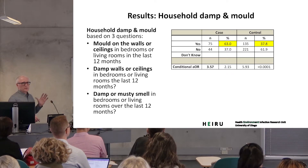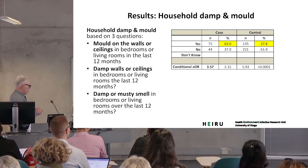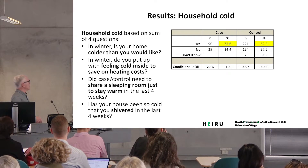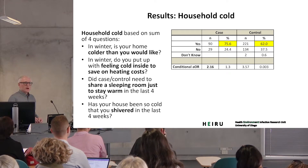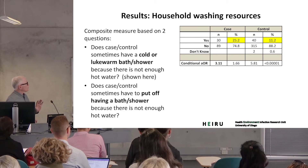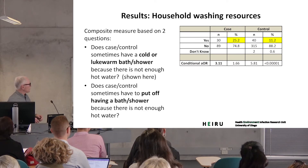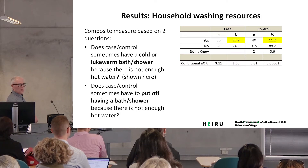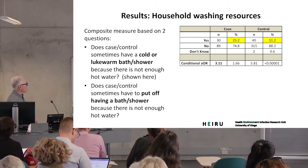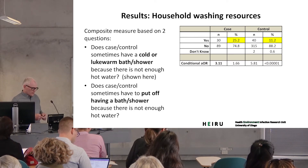We had a standard set of questions looking at damp, mould, and cold. The composite measure of household damp and mould showed a highly significant relationship with ARF, and a less significant relationship with four standard questions about cold in the house and difficult heating. We also looked at availability of washing facilities, producing a composite of two questions about fuel poverty — not having enough hot water, sometimes having to take a cold or lukewarm shower or having to put off bathing — and that was also related to risk.